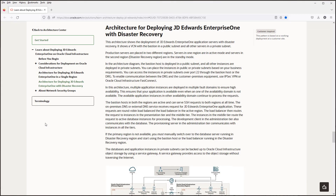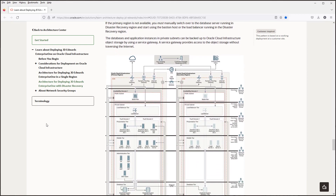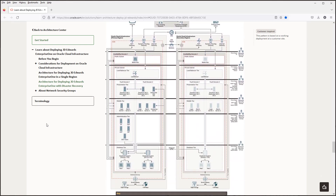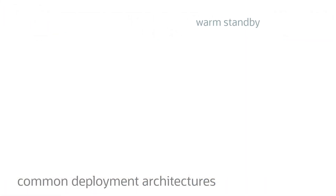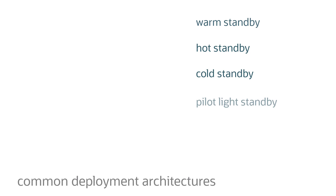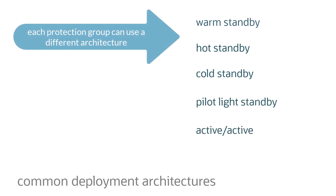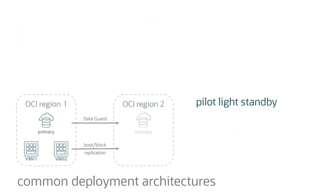These are just examples — you can probably find more. Remember, the applications have mostly documented solutions for warm or hot standby deployment architectures, and sometimes active-active deployments, but not Pilot Lite. Fullstack DR has no problem automating failover for any deployment architecture you devise.